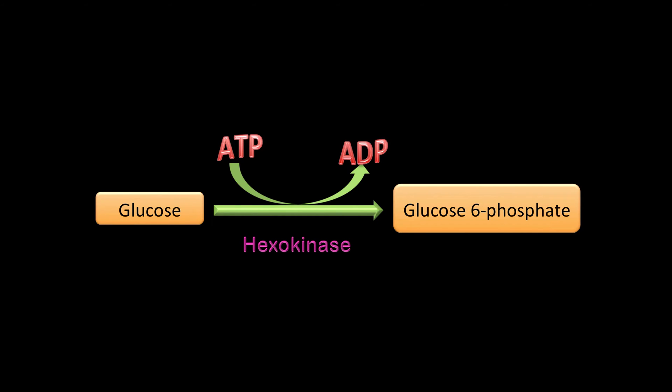If you look at the arrow here, it goes in one direction only. In glycolysis there are 10 enzyme reactions: seven of them are reversible, meaning they can go forward and in reverse. Three of them go in one direction only because going the other way is energetically unfavorable — there's a huge activation barrier. One such reaction is hexokinase. The other two are PFK1 and pyruvate kinase.